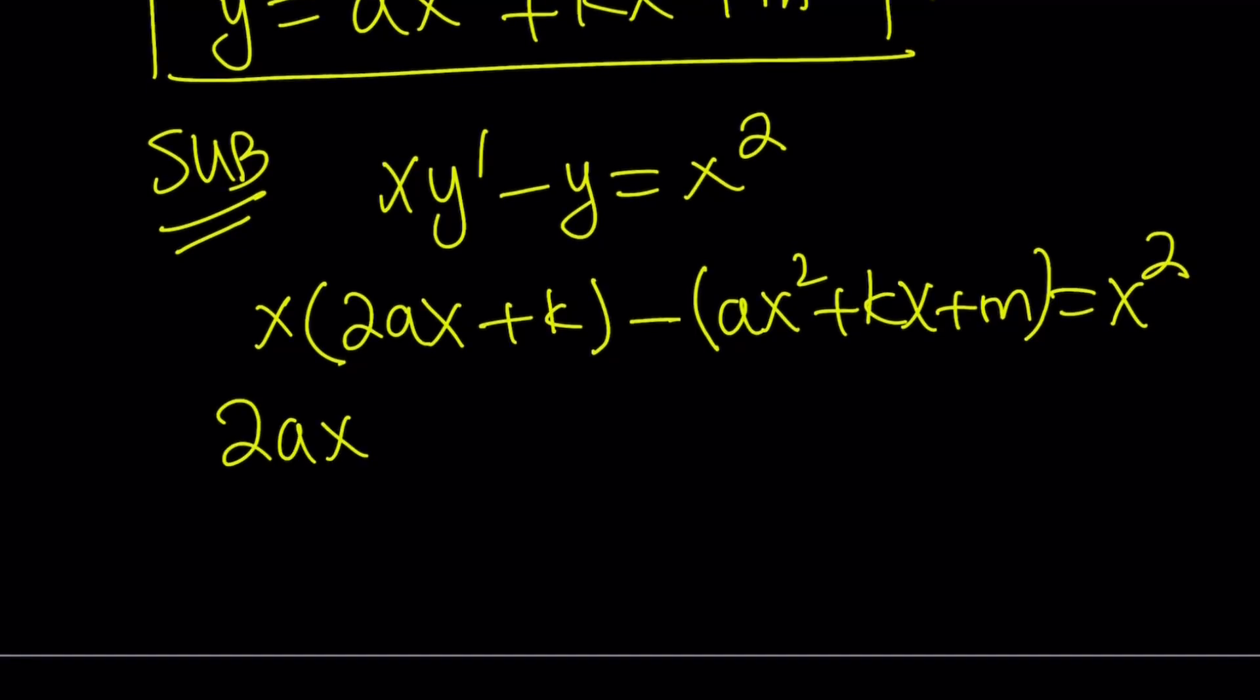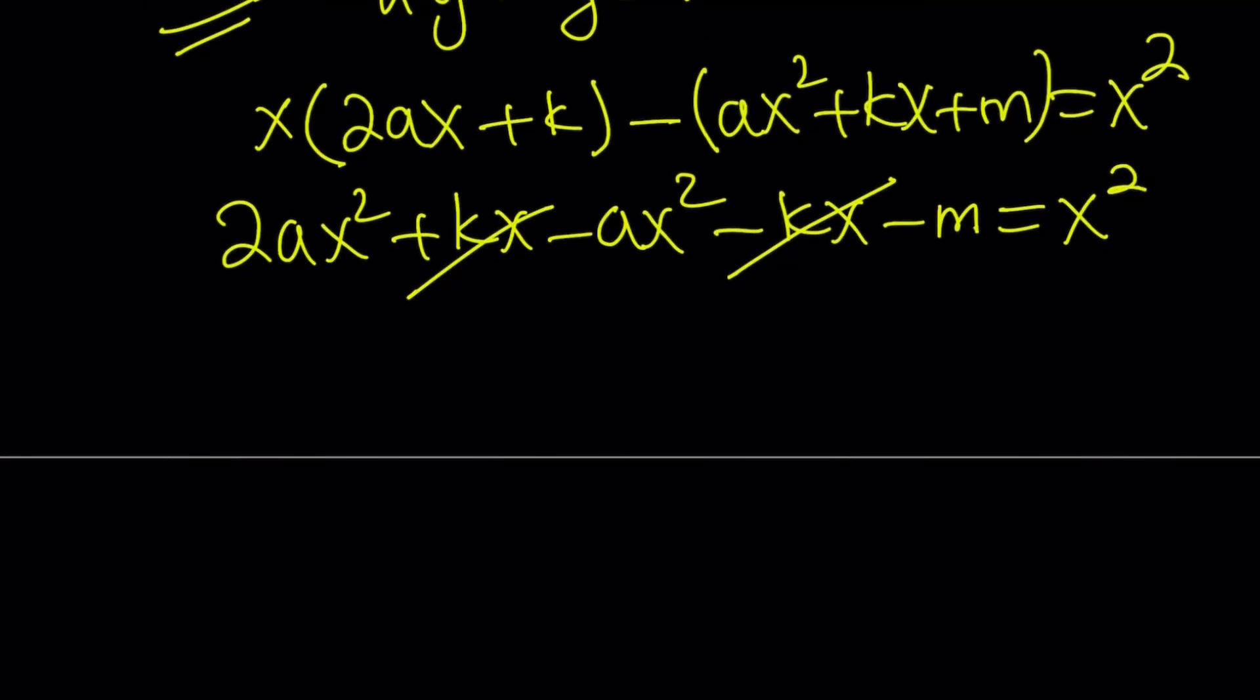This gives us 2ax squared plus kx minus ax squared minus kx minus m. Notice that kx disappears because it's the solution to the homogeneous equation. Great. So they're going to cancel out, leaving us with x squared. And from here, we get the following ax squared minus m equals x squared.